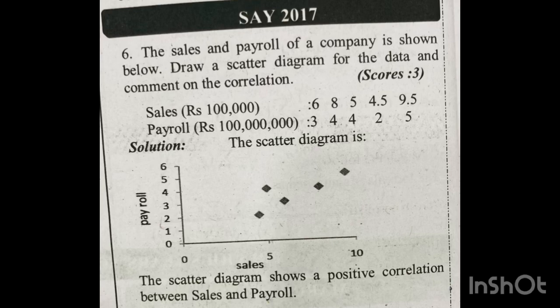Then sales is 5, payroll is 4. If you look at 5 on the x-axis, you can see a dot plotted on the scatter diagram.